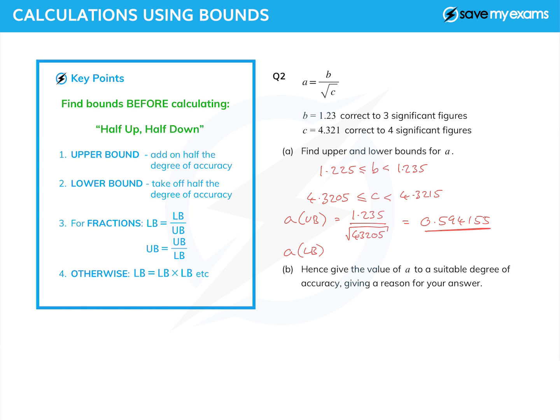And then the lower bound of a is going to be the lower bound on the top, so that's 1.225, over the square root of the upper bound on the bottom, which is 4.3215. And if I put that in my calculator, I get 0.589276. And so those are my lower and upper bounds for a.